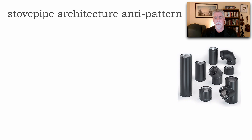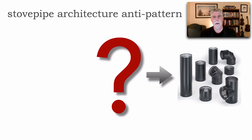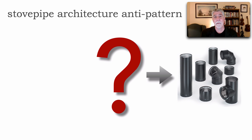In this lesson I want to address where this anti-pattern comes from — the reasons and drivers of how you arrive at a Stovepipe Architecture. I'll show a couple of examples from both the monolith and microservices, and then finally show some avoidance techniques for how to avoid this common anti-pattern.